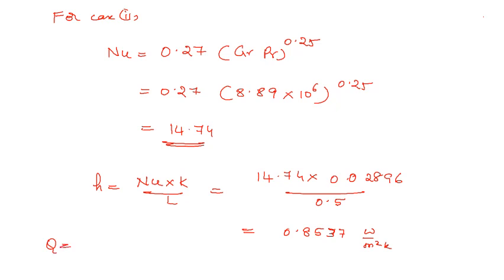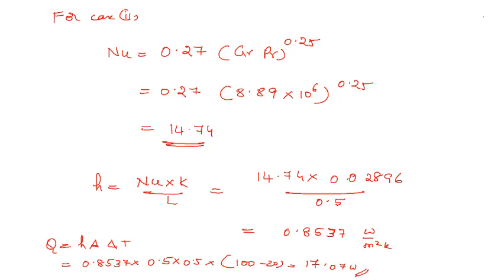For Case 2, Q = h·A·ΔT = 0.857 × (0.5 × 0.5) × (100 - 20) = 17.075 W. We can notice that when the upper surface is heated it is 143 W, but when heated from the bottom side it is about 17 W. This correlation is found in the data handbook at page number 136 for the lower heated surface.